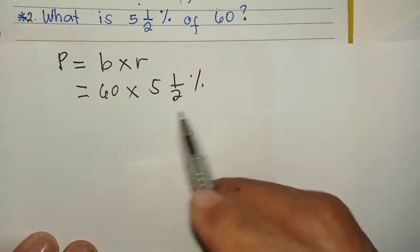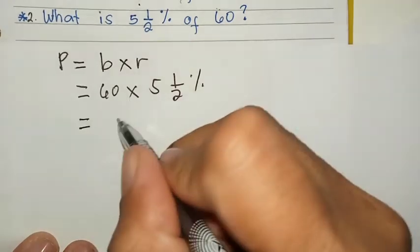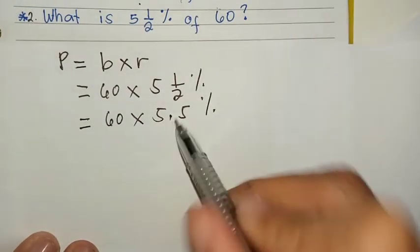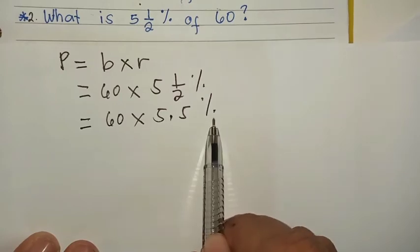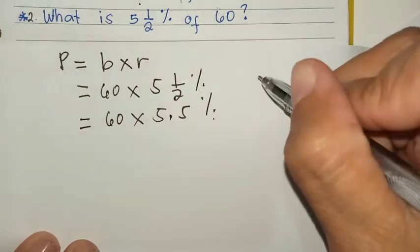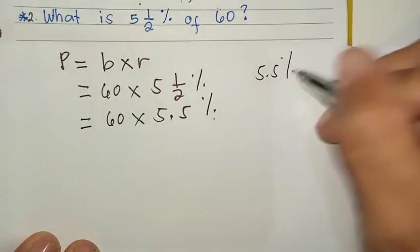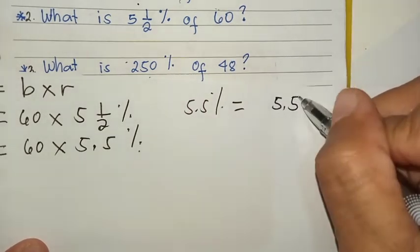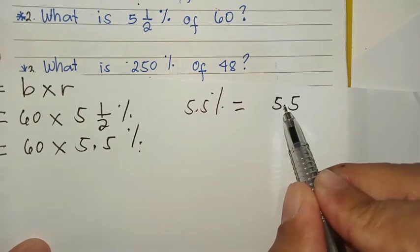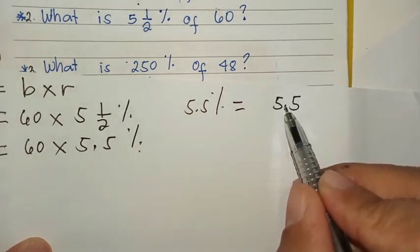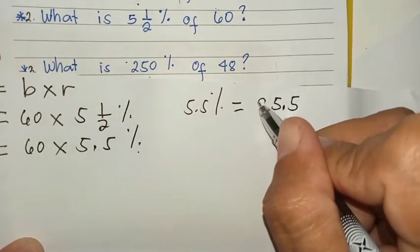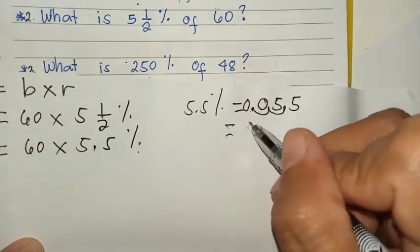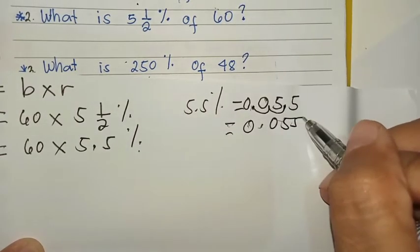What is one half? In decimal, it's equivalent to five tenths. So, sixty times five and five tenths percent. Now, five and five tenths percent, we need to change this into decimal. Drop the percent sign. Then we move the decimal point two places to the left. One, two. The answer is fifty-five thousandths.